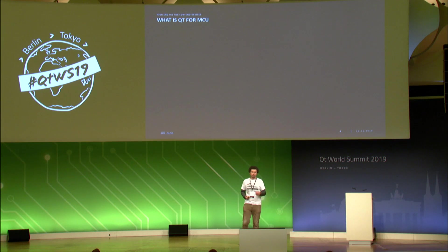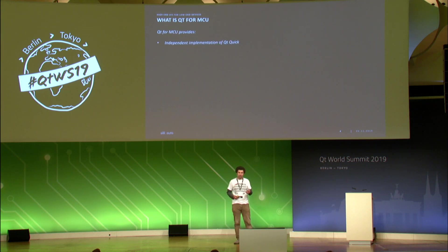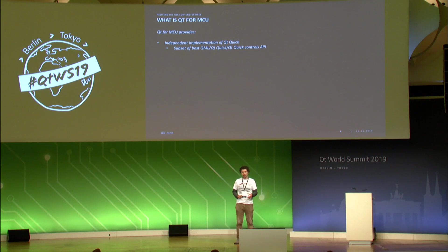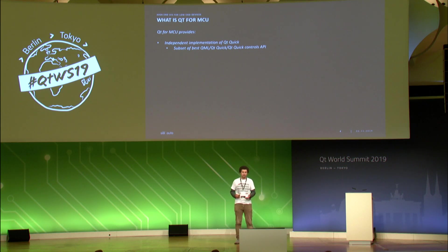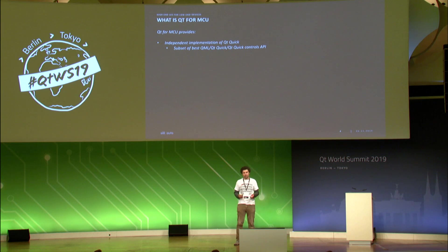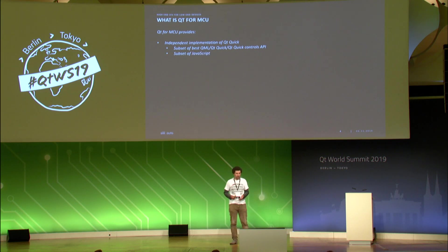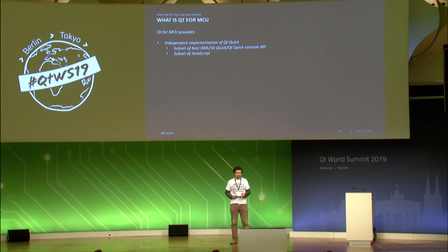Let's summarize what Qt for MCU is. It provides an independent implementation of Qt Quick with a subset of the best QML and Qt Quick APIs. You get basic items like rectangles, images, text fields, animations, transition states, and a basic set of Qt Quick Controls like buttons, switches, dials, and progress bars. You also have a subset of JavaScript — not full JavaScript, but enough to implement business logic within your QML application. As Simon explained, this gets compiled to native C++ code, making it fast and efficient.